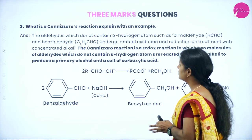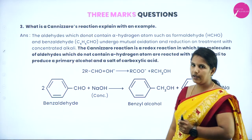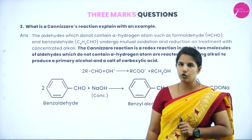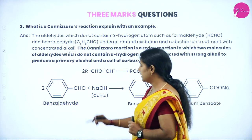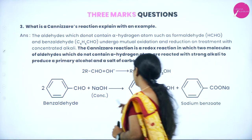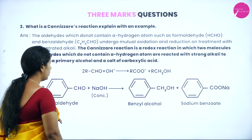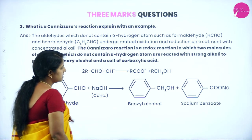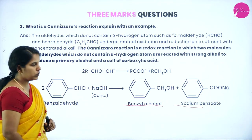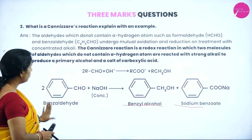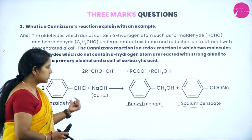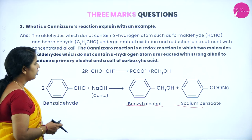Cannizzaro reaction explained with an example. Aldehydes that do not contain an alpha hydrogen atom will undergo Cannizzaro reaction. Benzaldehyde is allowed to react with a very strong base (NaOH). Two molecules of benzaldehyde react with concentrated NaOH to give a mixture of benzyl alcohol and sodium benzoate.